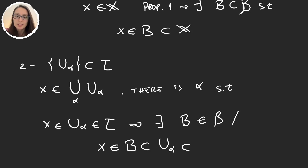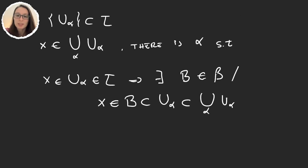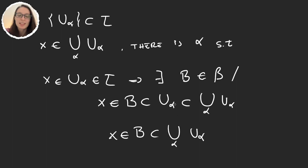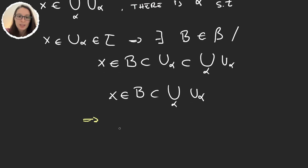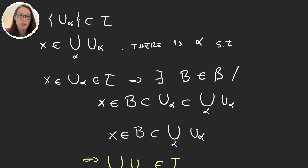Since U_α is a subset of the union of all the sets, we have found a basis element B such that x ∈ B ⊆ union of all U_α. This is exactly what was needed for the union to be in our topology. So the union of all these sets is in our topology, and with this we have proven the second property.